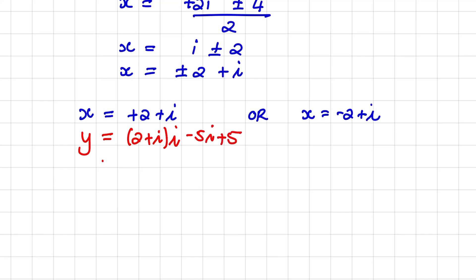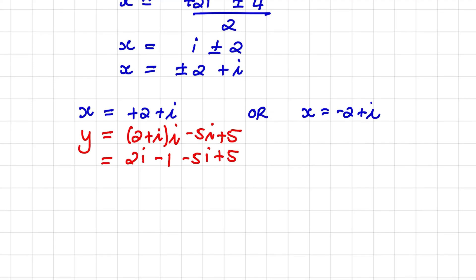And when I expand, I have 2i minus 1 minus 5i plus 5. And the negative 1 comes from i times i, which is i squared. And that is equals to negative 1. So y would be equal to 4 minus 3i when x is equals to 2 plus i.